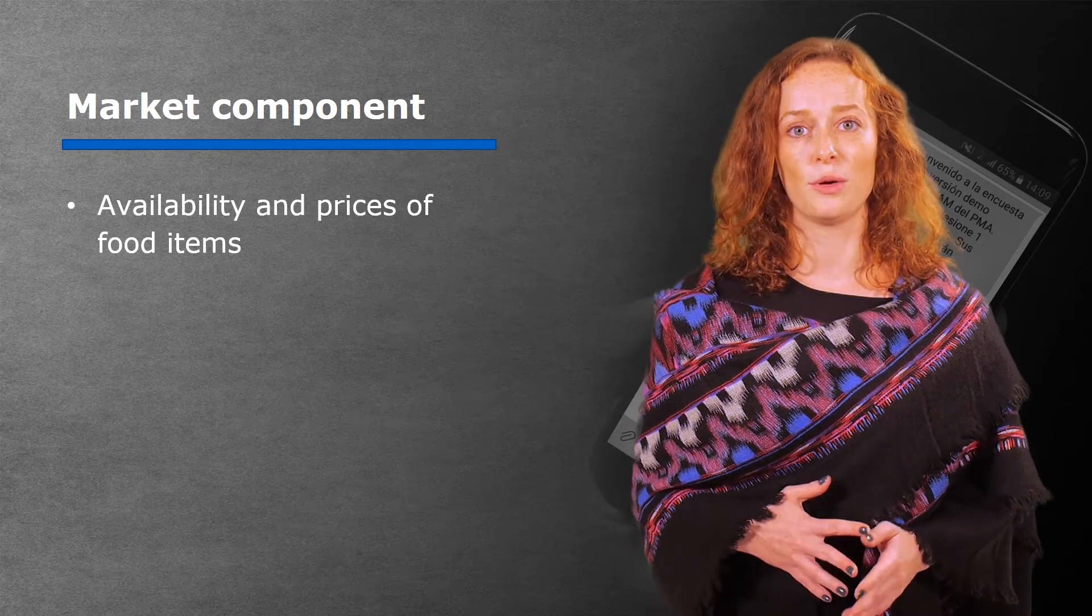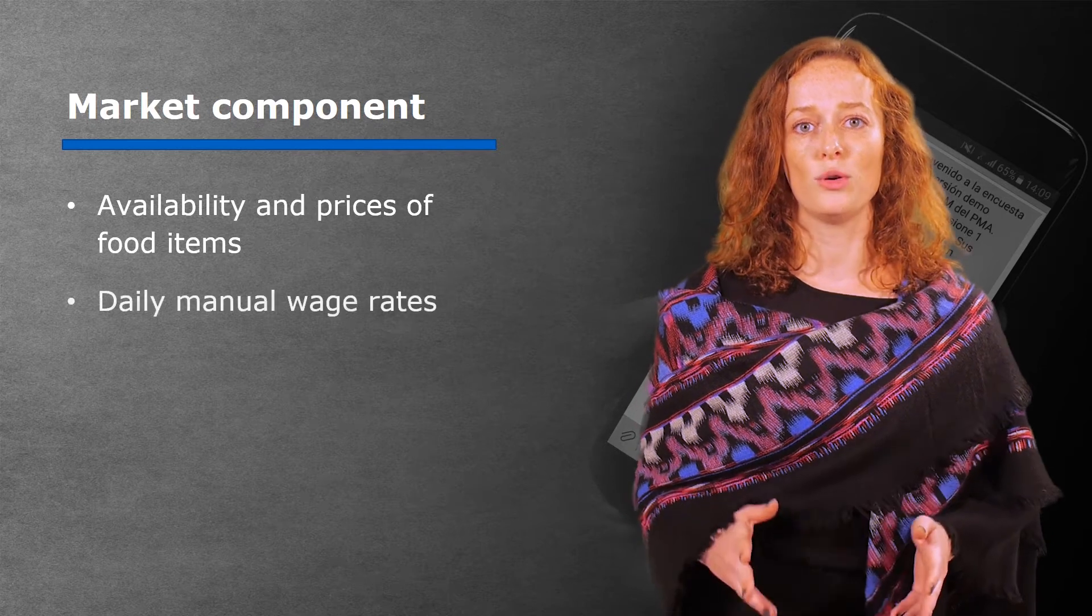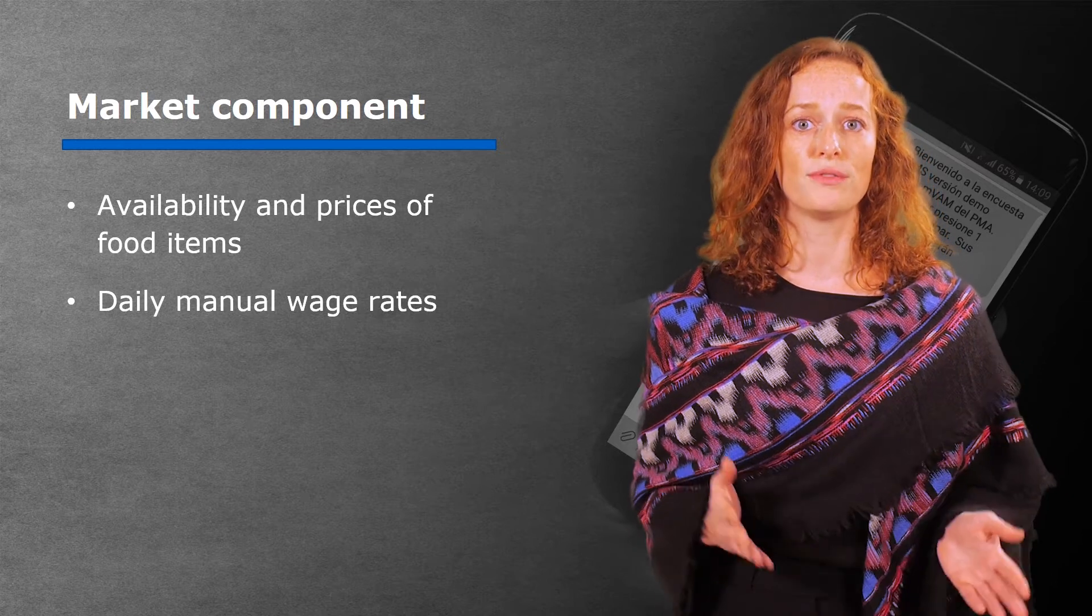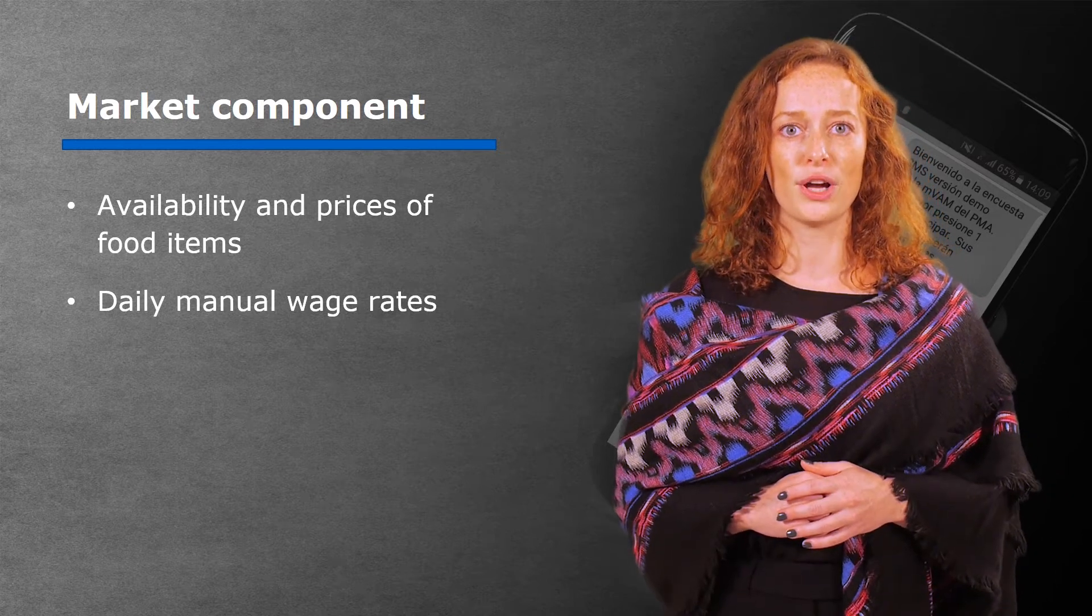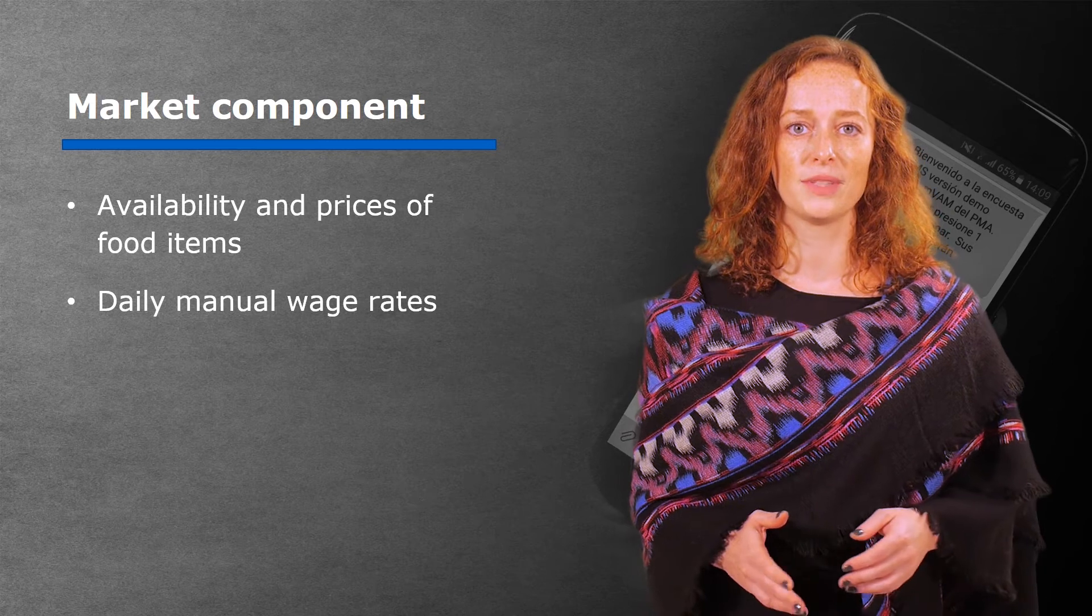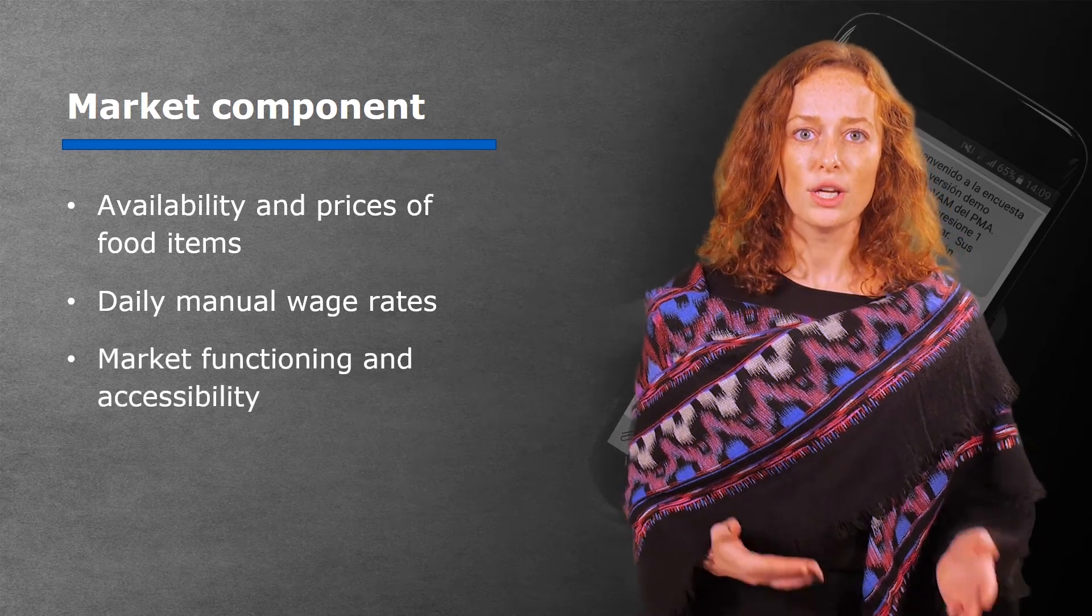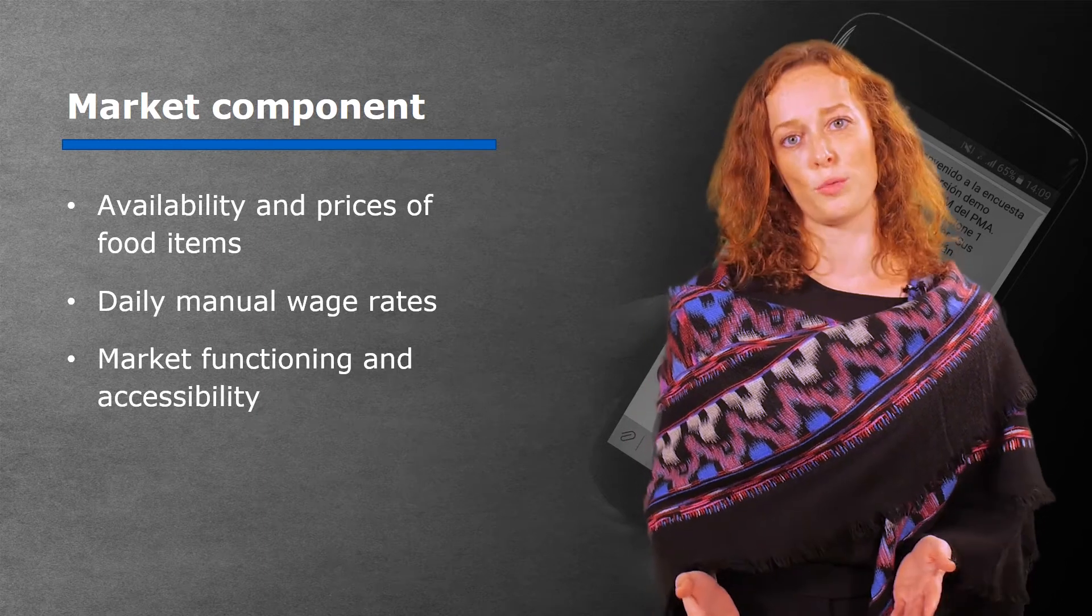Another indicator we look at is daily manual wage rates. These allow us to calculate wage to food terms of trade and thereby monitor household purchasing power. We also ask about market functioning and accessibility in order to understand if markets and supply routes are open.